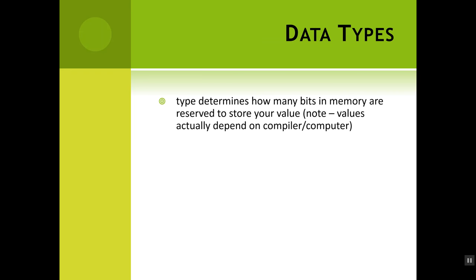Data types determine how many bits in memory are being reserved for you, like how much space is set aside. Depending on what kind of information you want to store, a computer will set aside more or less space. Types that you can have are int, which is short for integer, or whole numbers. They can be negative, positive, or zero.